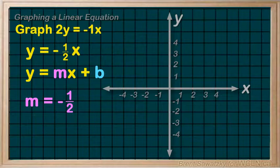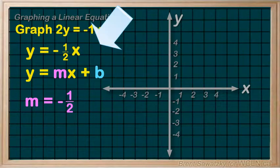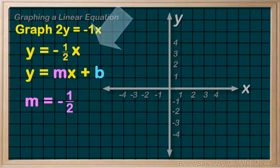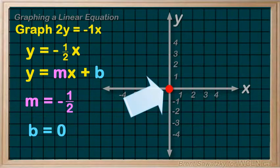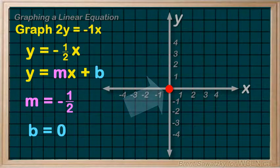And so now we can see that in this case, the slope is negative one over two. But where's the b? We don't have a b here. So the y-intercept must be—well, it must be zero.